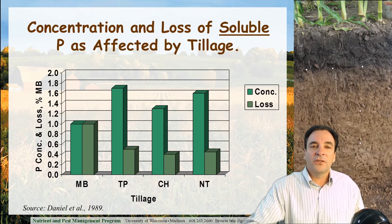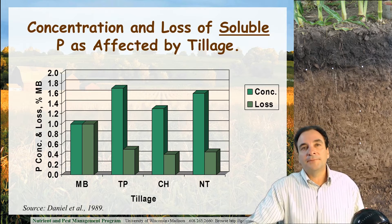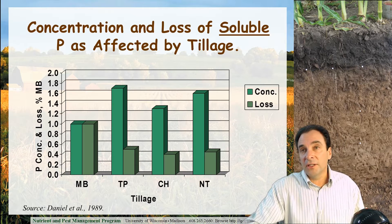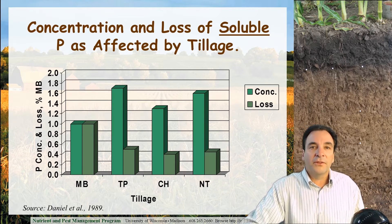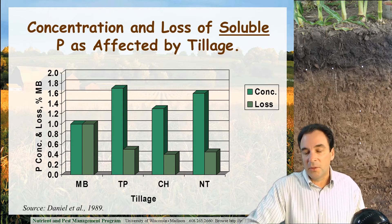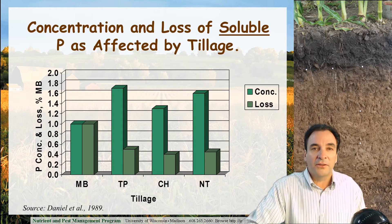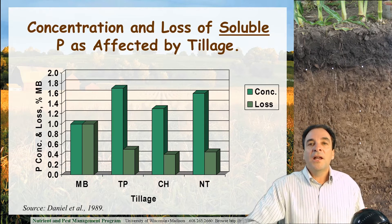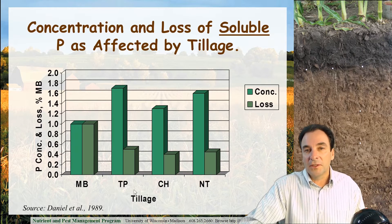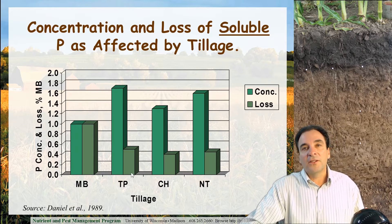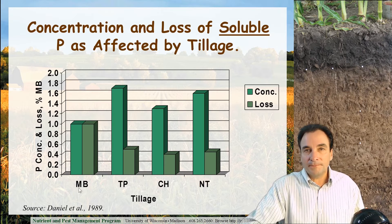This is some research done in Wisconsin looking at concentration and loss of soluble P. Remember, soluble P is phosphorus that's immediately available to aquatic weeds and algae once it hits a surface water body. Here we're looking at the impact of tillage systems, specifically conservation tillage systems — till plant, chisel, no-till — compared to moldboard plowing.